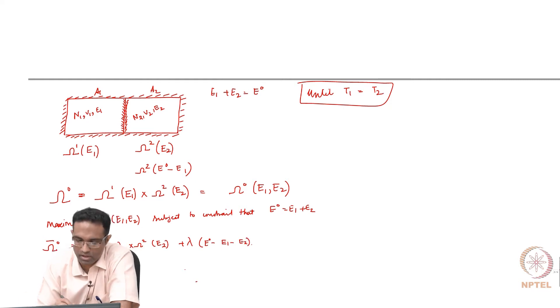We need to extremize this with respect to the variables E1 and E2. When we want to extremize, we have to differentiate this entire function with respect to E1 equal to 0 and then with respect to E2 equal to 0.